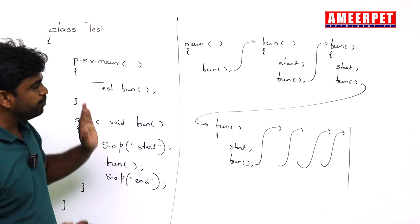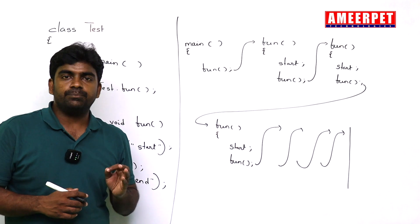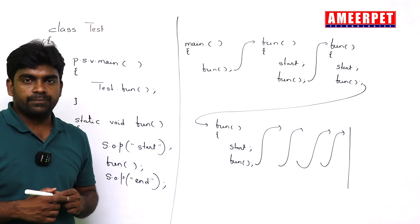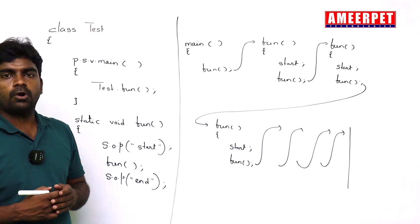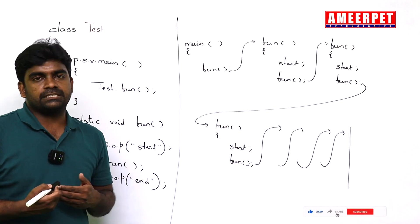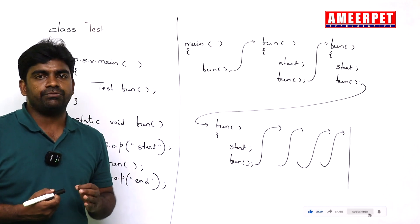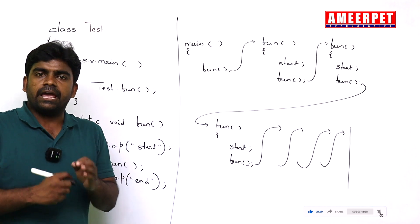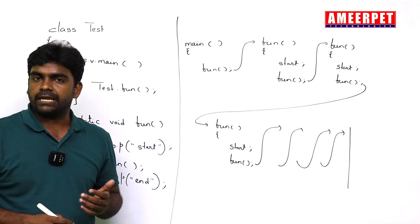So this is a simple flow of recursion program execution in Java. But then how to control all these things? That I will explain in the next video. Please watch the series of these recursion videos. Everything you will understand. Thank you.